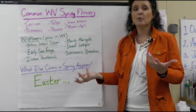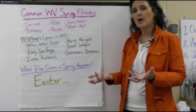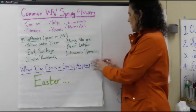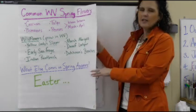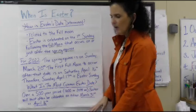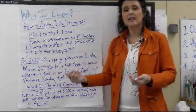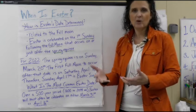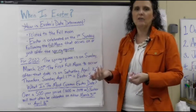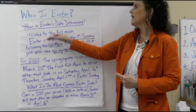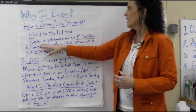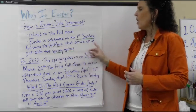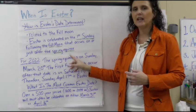What else comes in spring? Easter. Let's look at some things about Easter — when is it, and how do we determine the date? Christmas is December 25th, New Year's Day is January 1st every year, but why does Easter move around? It's related to the full moon. Easter is celebrated on the first Sunday following the full moon that occurs on or just after the vernal, or spring, equinox. That's why it moves.